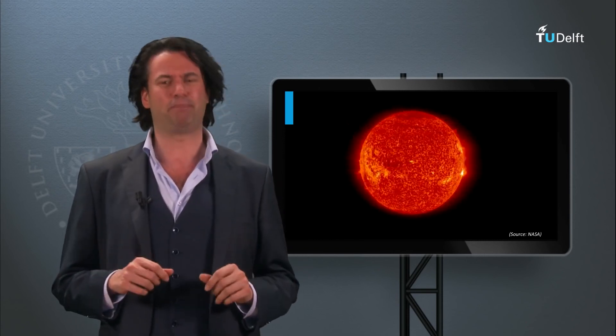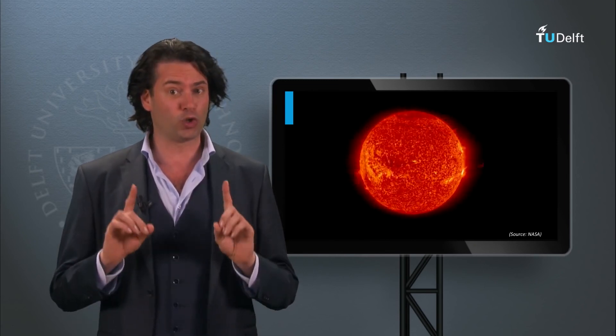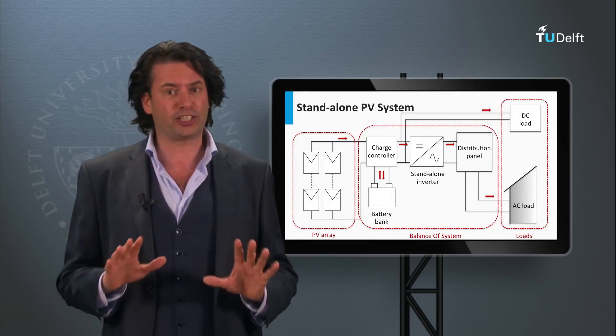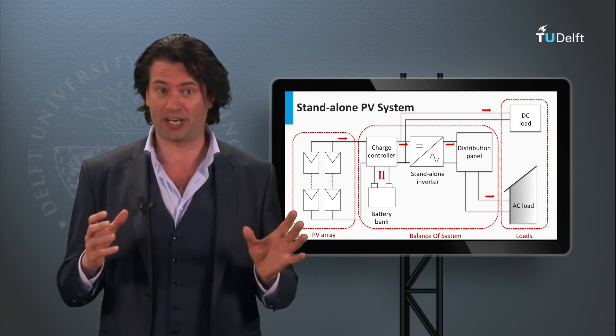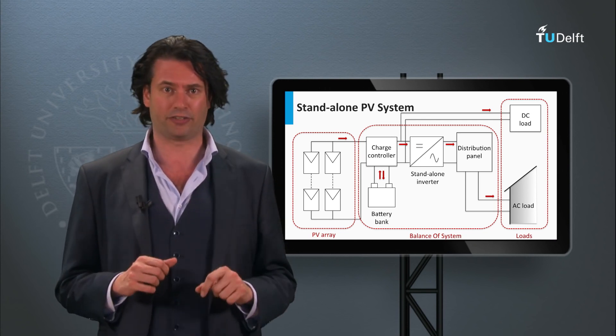Welcome back to the last week of this course. In week 7 you saw the various PV system components and their characteristics. Now we will see how these components come together and make up a PV system. We will not only look at the characteristics of these PV systems, but also look at some of their basic design rules. We will first start with the stand-alone PV system, also called the off-grid PV system, simply because it functions independent of the electric grid.